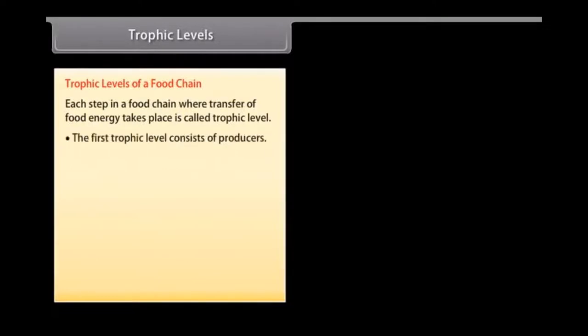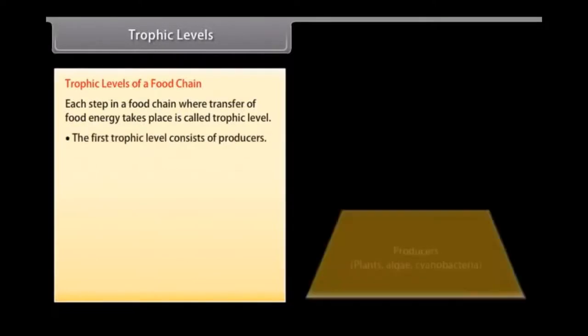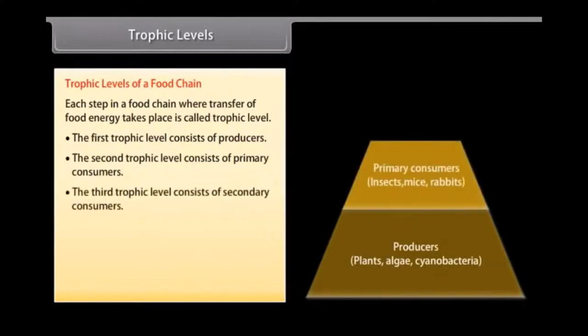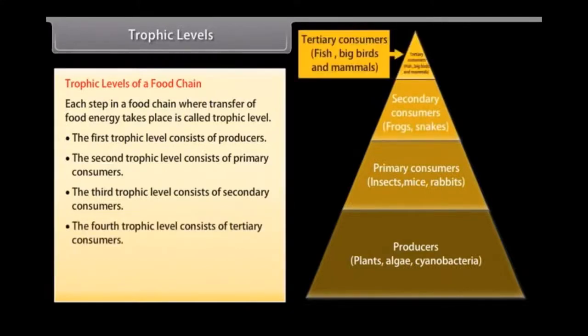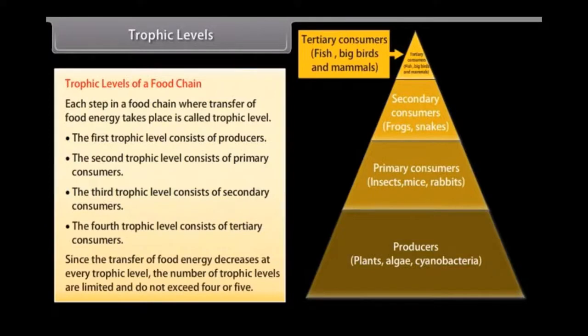Trophic level. Each step in a food chain where transfer of food energy takes place is called trophic level. The first trophic level consists of producers. The second trophic level consists of primary consumers. The third trophic level consists of secondary consumers. The fourth trophic level consists of tertiary consumers. Since the transfer of food energy decreases at every trophic level, the number of trophic levels are limited and do not exceed four or five.